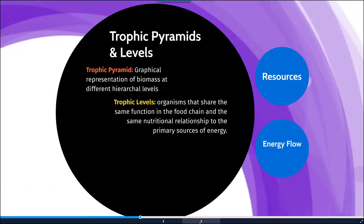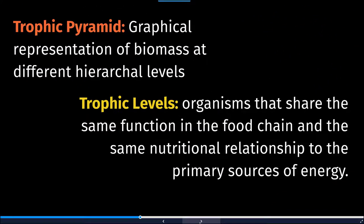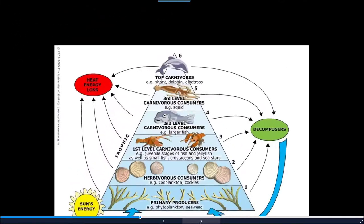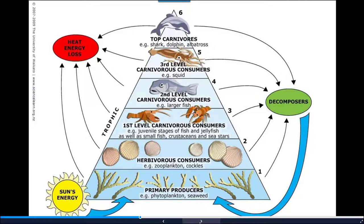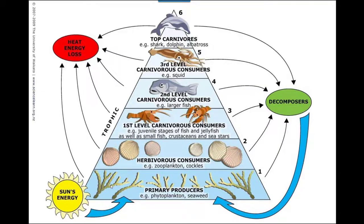Let's take a look at trophic pyramids and trophic levels. A trophic pyramid is a graphical representation of biomass at different hierarchical levels. Trophic levels consist of organisms that share the same function in a food chain and the same nutritional relationship to primary sources of energy. At the bottom of the pyramid, we have primary producers — photosynthetic organisms that obtain energy from the sun, and which exist in large abundance.